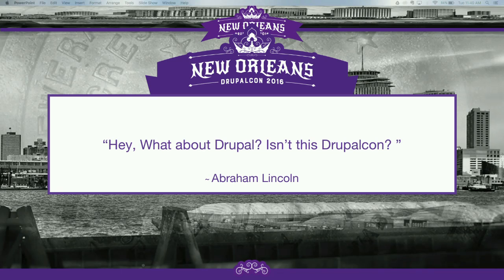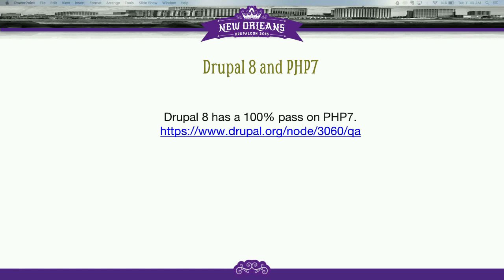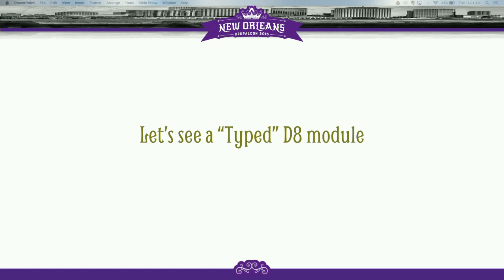Some of you might think - this is DrupalCon, so what about Drupal? I believe Drupal 8 and PHP 7 is a great combination. Drupal 8 has 100% pass on PHP 7 - all automated tests of Drupal 8 passed on PHP 7. So you could technically use PHP 7 in your Drupal 8 development. Drupal 7 still has a couple of issues to be solved and is not 100% compatible with PHP 7, but Drupal 8 is. Let's look at a typed date module - using PHP 7 to build a module with the typing features we just saw.